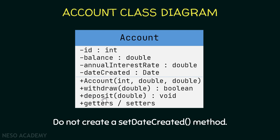Next is a public method called deposit that takes a double and returns nothing. This method takes the amount passed as a parameter and adds it to the balance.